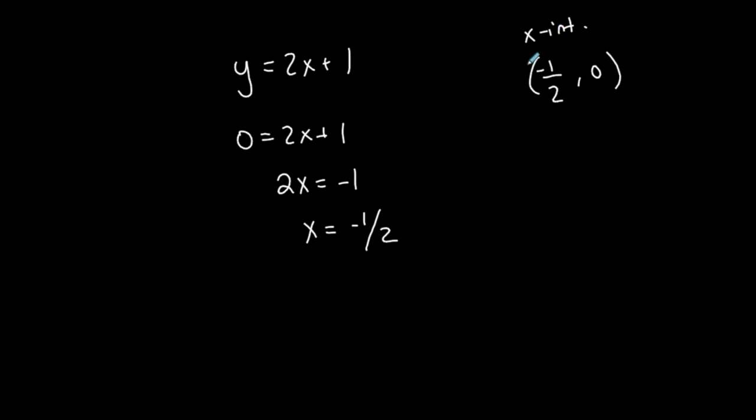And if you're asked specifically for an x-intercept, to find the x-intercept, you're going to solve for x when y is 0. So set y equal to 0, and then you solve for x. Now if you're looking for a y-intercept, you're going to set x equal to 0 and solve for y. So this is important to know for later on.